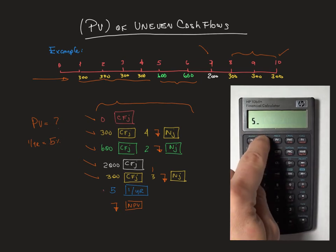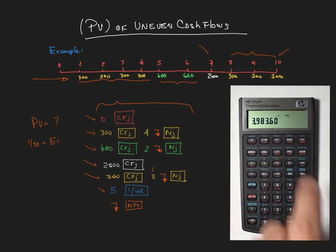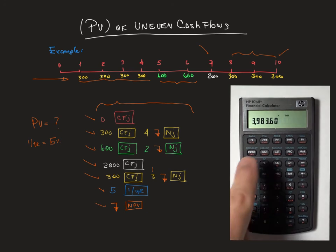Then we are going to introduce the discount rate which is 5% so it's 5% and then hit the button SHIFT NPV and you will find the present value.